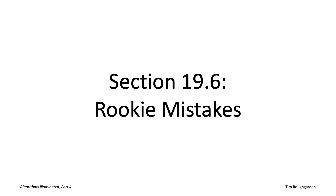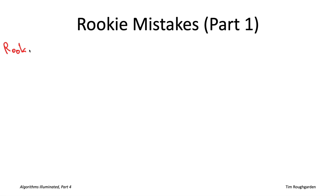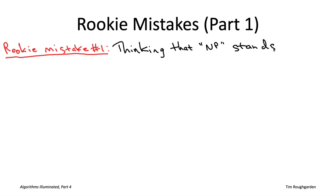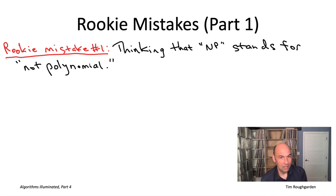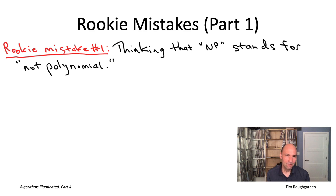Let's begin with a list of five common rookie mistakes. The first concerns the acronym NP — what does it stand for? It's not that important that you remember what it stands for, as long as you remember what it doesn't stand for. It does not stand for 'not polynomial.' While most people believe NP-hard problems cannot be solved in polynomial time, that is not what NP stands for. If you're curious, the answer is non-deterministic polynomial time, covered in the optional lectures on P versus NP.